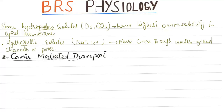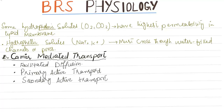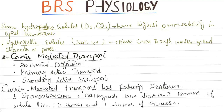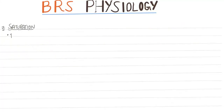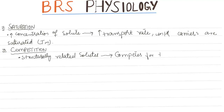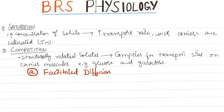Carrier-mediated transport has three types: facilitated diffusion, primary active transport, and secondary active transport. Carrier-mediated transport has the following features. It is stereospecific, meaning it can distinguish between different isomers of a solute, like D-isomer and L-isomer of glucose — D-isomer is transported by facilitated diffusion but L-isomer is not. Saturation: increased concentration of solute causes increased transport rate until carriers are saturated. Competition: structurally related solutes compete for transport sites on carrier molecules, for example glucose and galactose.